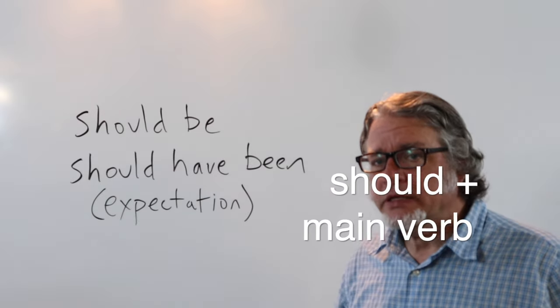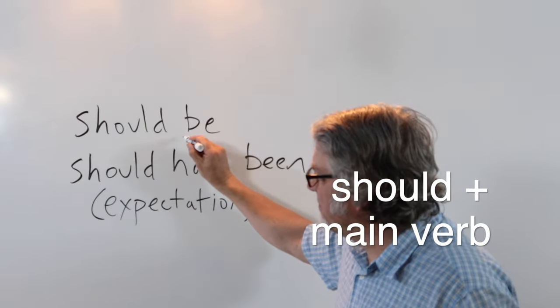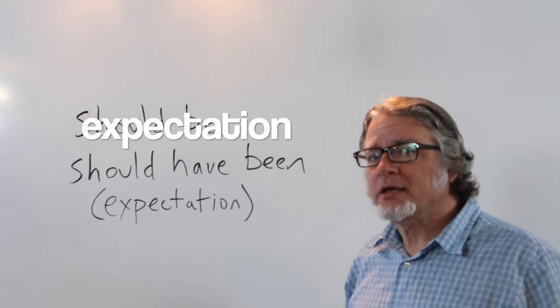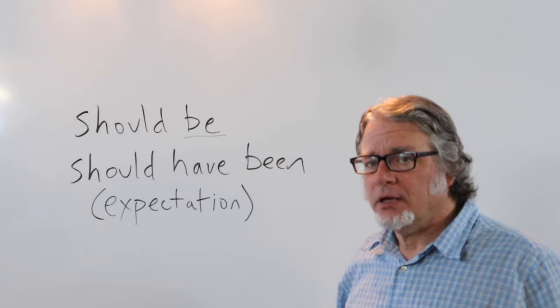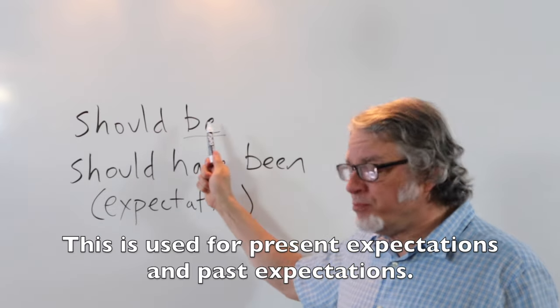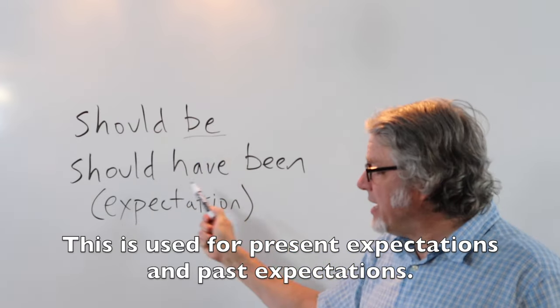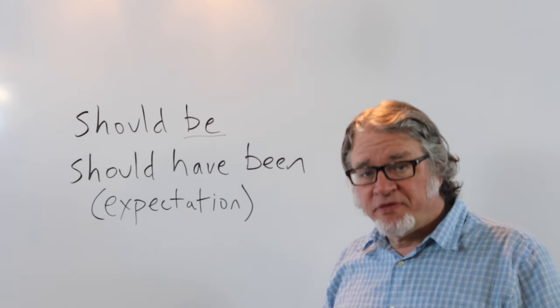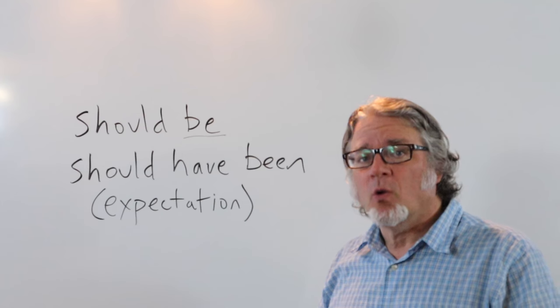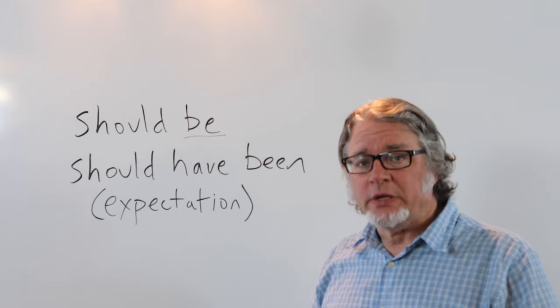You can use should and then the main verb when talking about some form of expectation. This is used for present expectations and past expectations. You think something will happen or you thought something would happen.